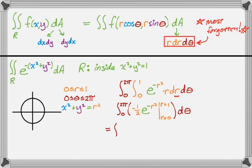So 0 to 2 pi, if you let r equal 1, you just get negative 1 half e to the negative 1. And then minus, if you let r equal 0, you get negative 1 half, and then e to the 0, but that's just 1.